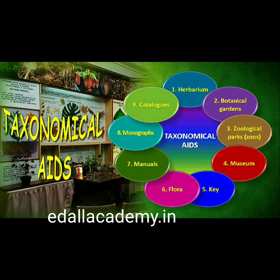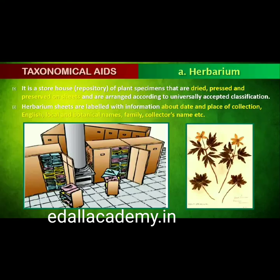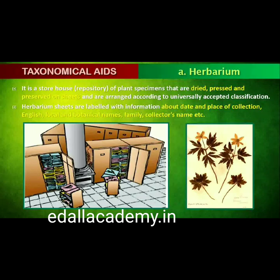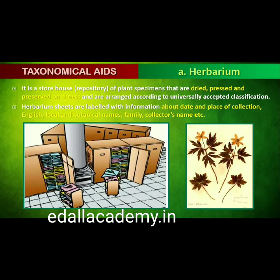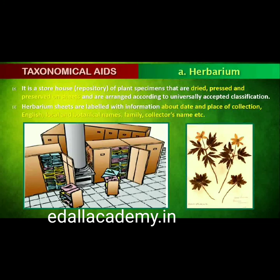Biologists have established certain procedures and techniques to store and preserve the information as well as the specimens. Herbarium is a storehouse of collected plant specimens that are dried, pressed and preserved on sheets. These sheets are arranged according to a universally accepted system of classification. These specimens, along with their descriptions on herbarium sheets, become a repository for future use. The herbarium sheets also carry a label providing information about date and place of collection, English, local and botanical names, family, collector's name, etc. Herbaria also serve as quick referral systems in taxonomical studies.